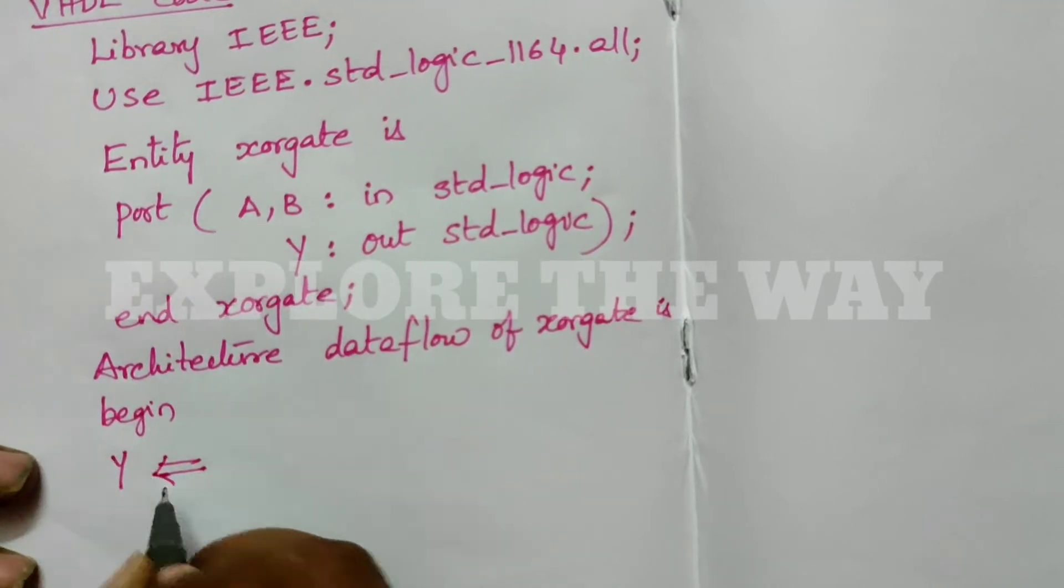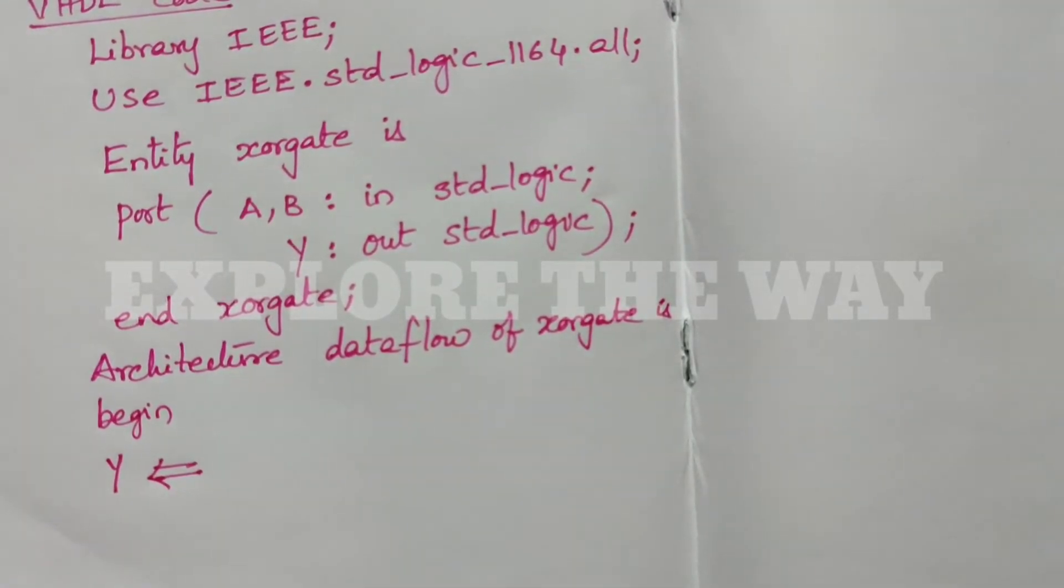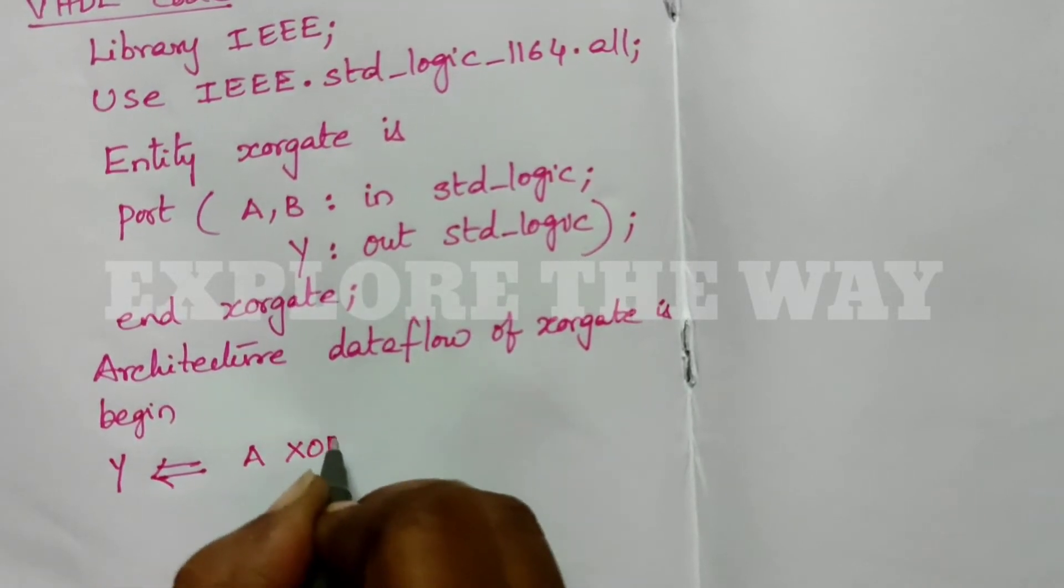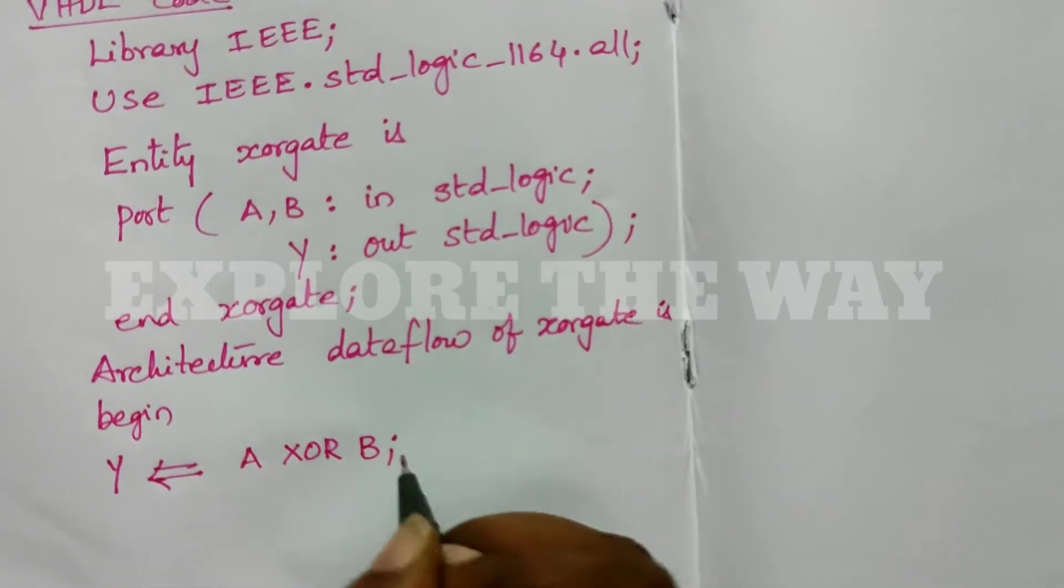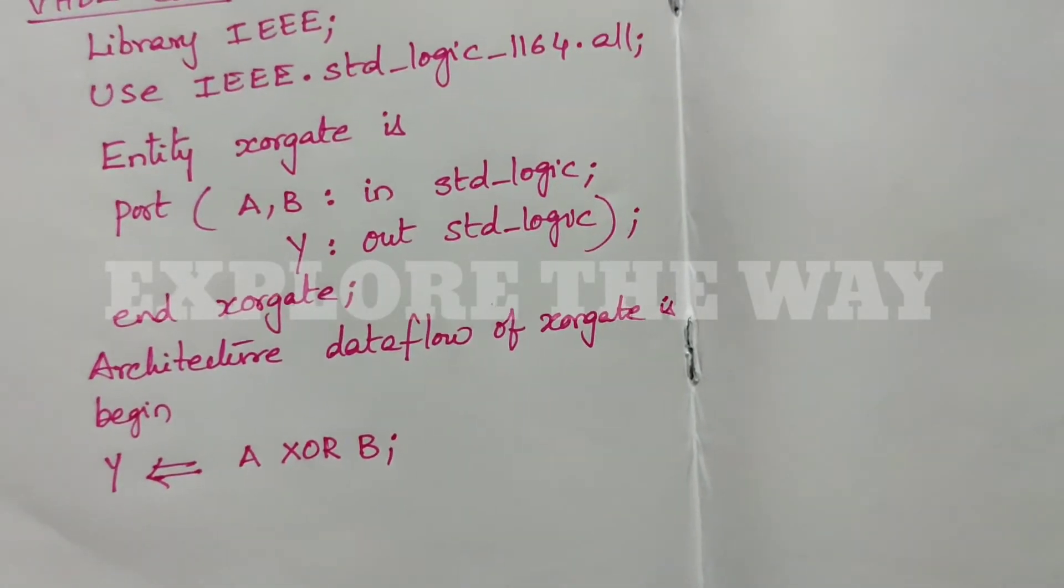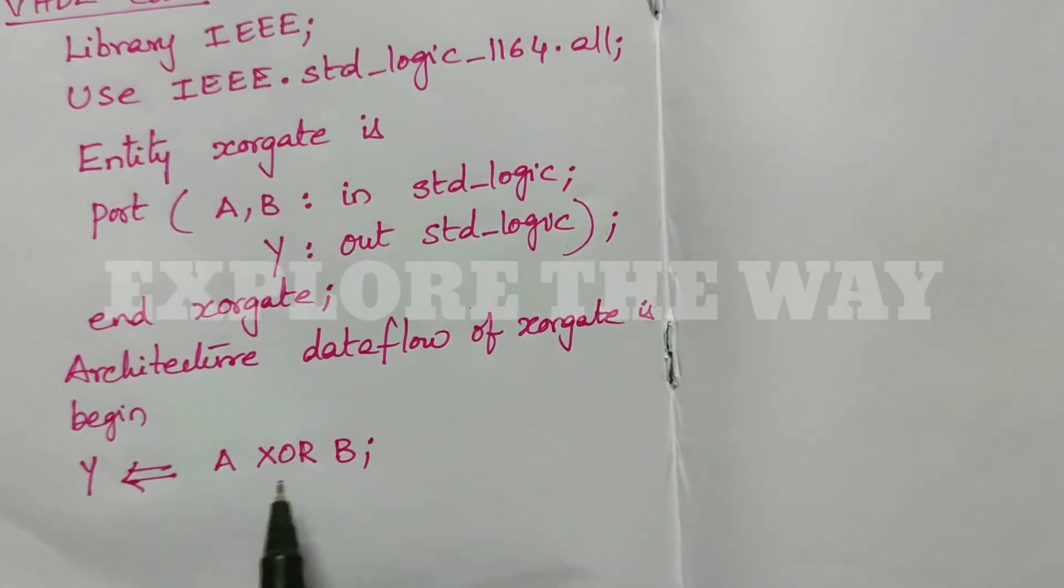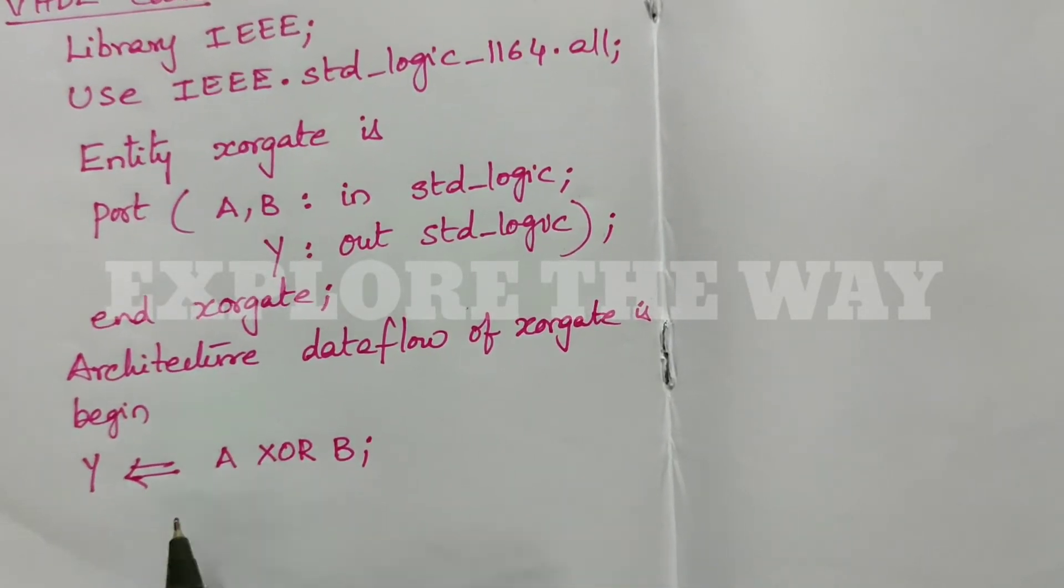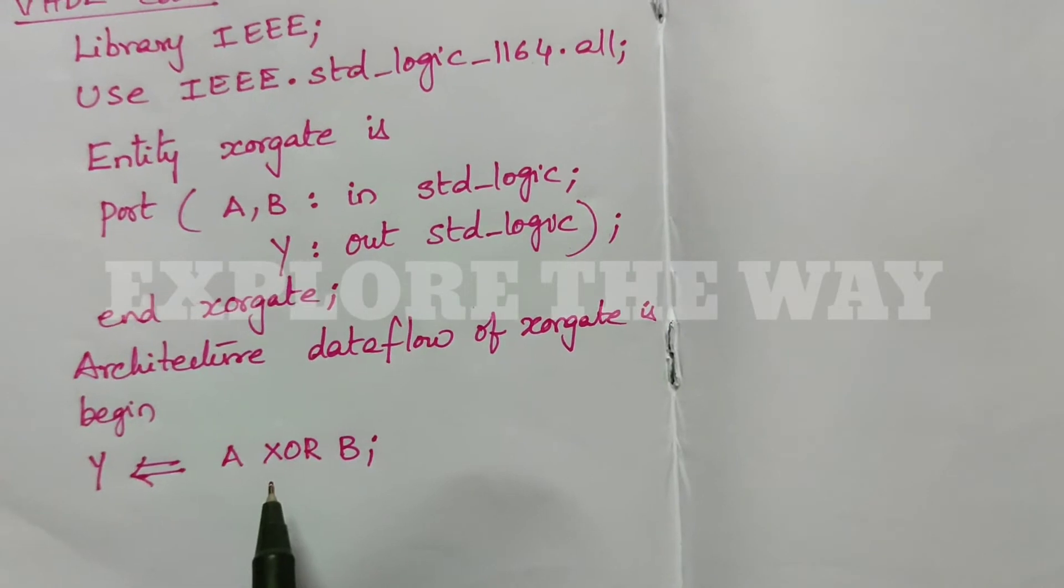The output Y is assigned: Y <= A XOR B. XOR is the VHDL operator, and this statement is a concurrent assignment statement. In dataflow style, we use concurrent assignment statements and VHDL operators.